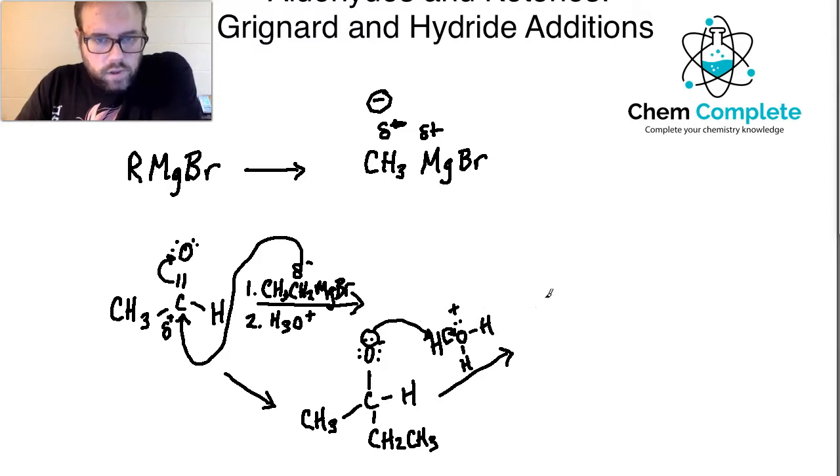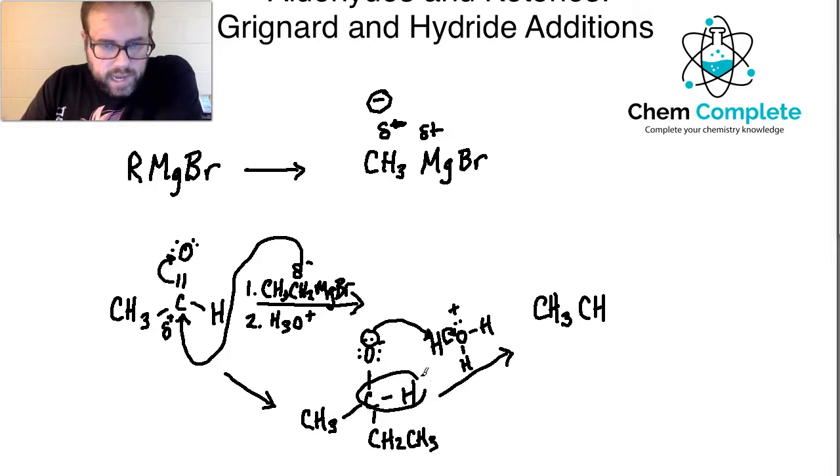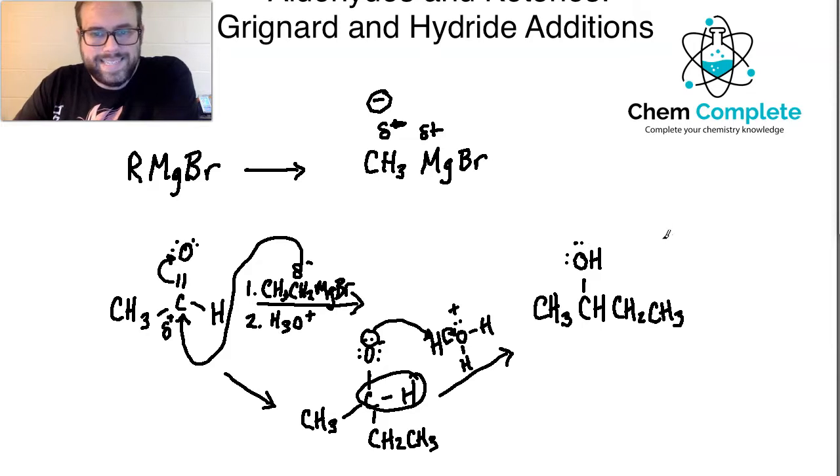So this is going to the oxygen. Those electrons are going back to the oxygen, and you end up with an alcohol. So the end result of this is that I would have CH3CH, right? Because this group right here is a CH, so I'm just condensing it. CH, and then CH2CH3. And then this would have the alcohol, right? So an aldehyde is able to go to a secondary alcohol with a Grignard reactant.